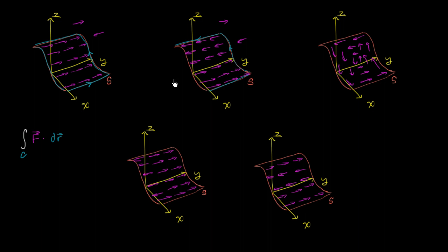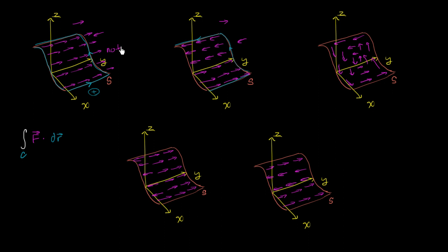The only difference between each of these is what the vector field f is doing. In the first example, at the bottom part of the contour, the vector field is going in the exact same direction as our contour, so we get positive values of f dot dr. As we go uphill, the vector field is going essentially perpendicular to our contour, so f dot dr gives us 0 along that part.